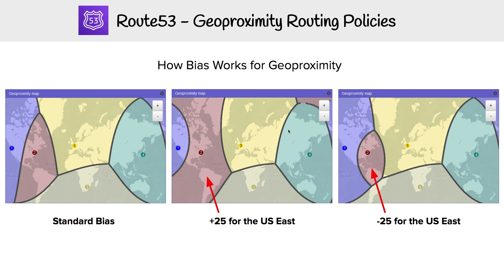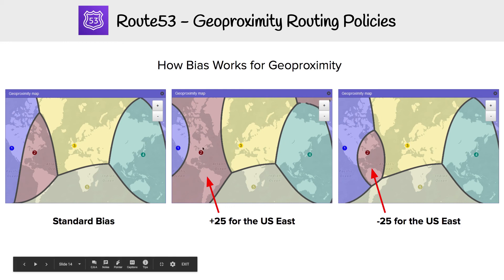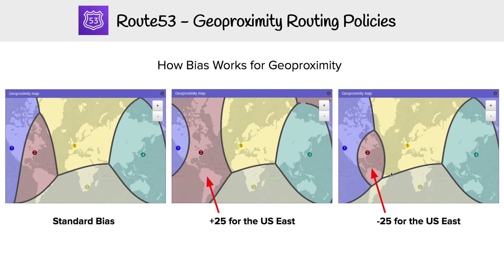The idea is that you are choosing a region — you can choose one of the existing AWS regions, or you can give your own set of coordinates. You're giving it a bias around this location, and it's going to draw boundaries. So if we created a geo proximity routing for these regions, this is what it would look like. If we give this one 25% more bias, it becomes a bit larger, and if we minus it, it's going to reduce it. That's the idea behind geo proximity — you have these boundaries.